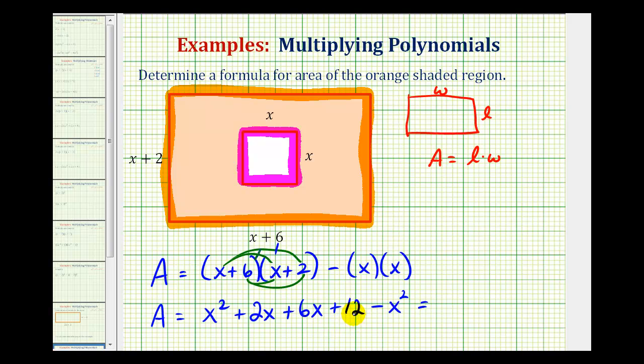So now we'll simplify this by combining like terms. We have two x squared terms, as well as two x terms.